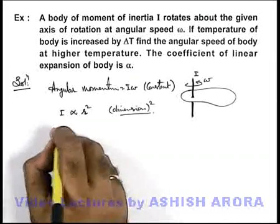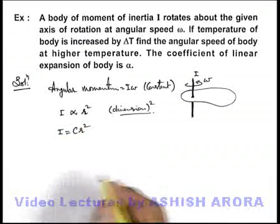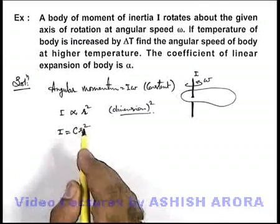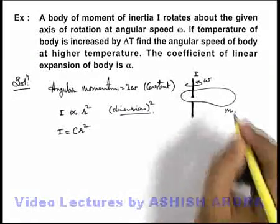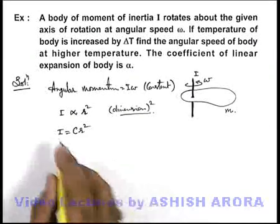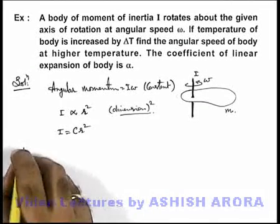So we can write the moment of inertia of any body as cr², where c is also a constant which will consist of some numerical values as well as mass of this body. And if temperature is increased, the dimensions will certainly increase.